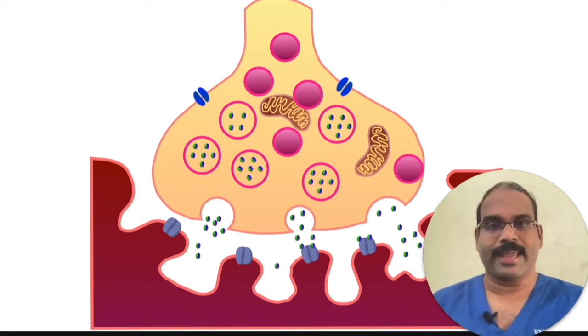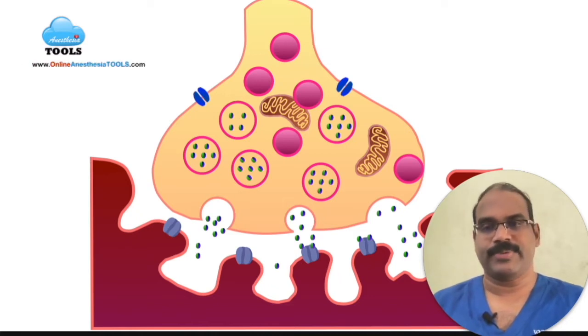The membranous component of the vesicles is taken back by the nerve terminal and repackaged with new acetylcholine inside the nerve. Acetylcholine gets replenished by the enzyme choline acetyltransferase using acetyl-CoA and choline as its substrates.